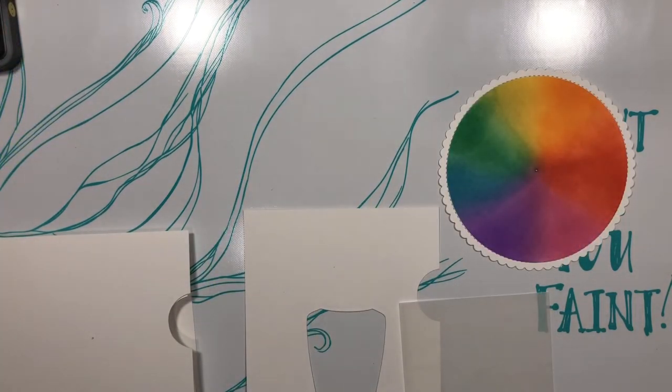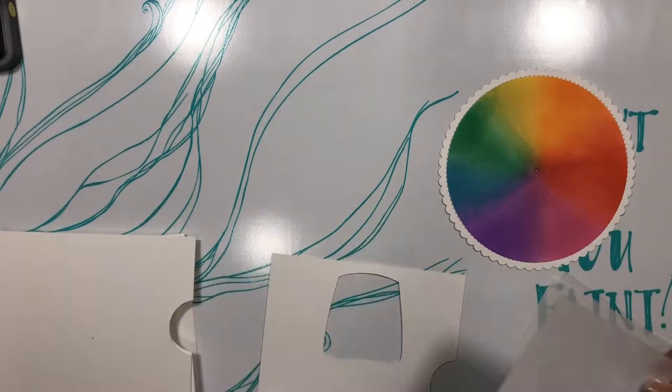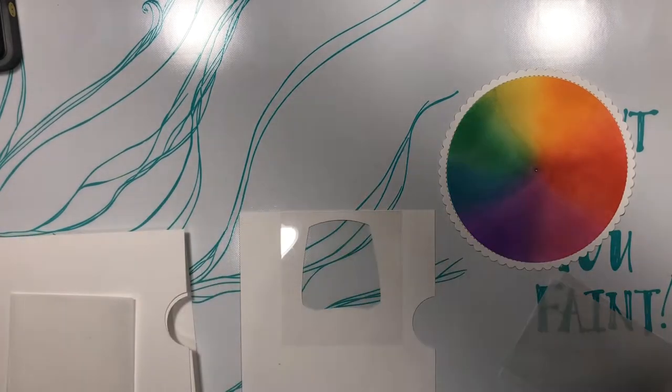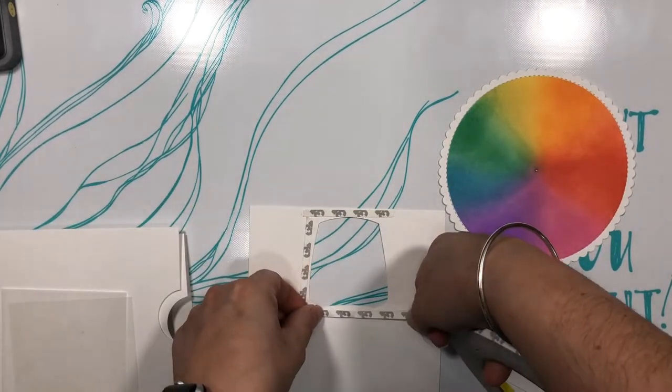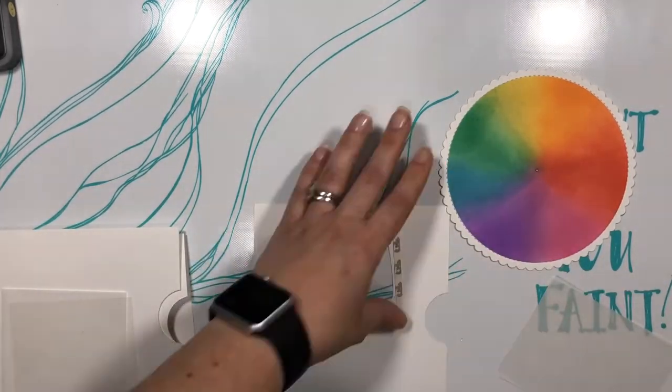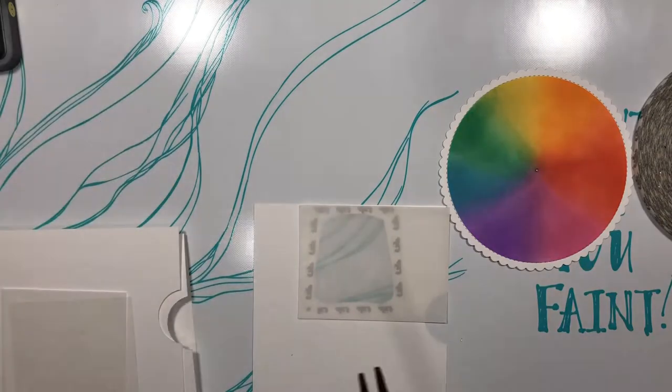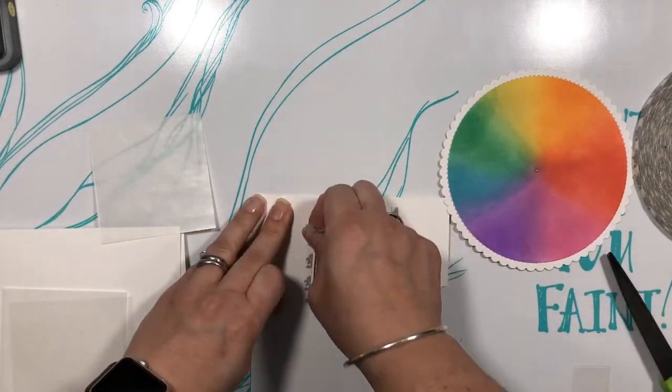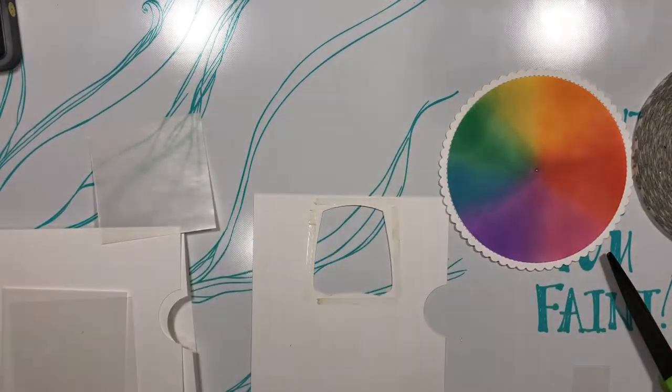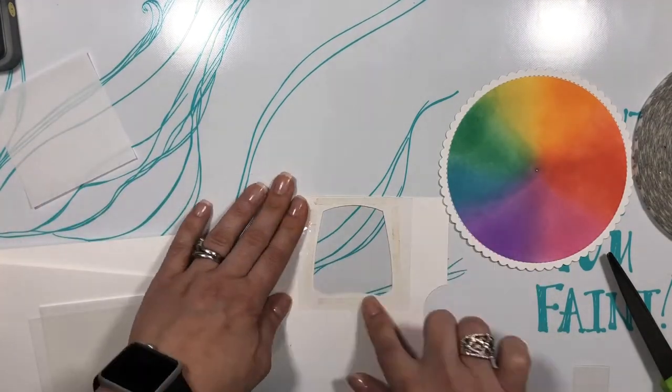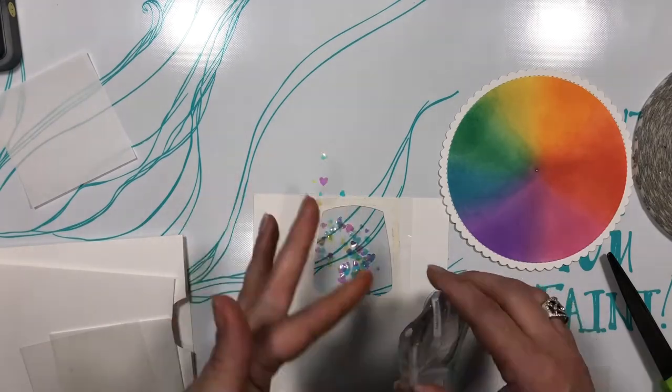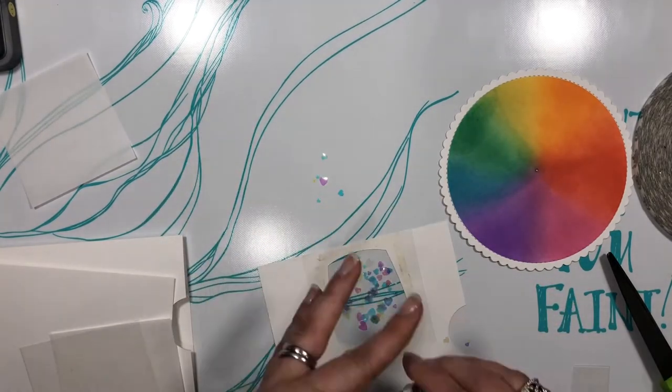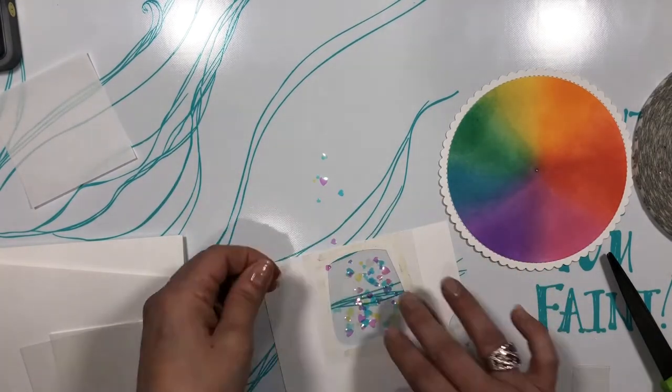To the nail polish bottle I thought it would be fun to add another interactive element. I wanted to create a nail polish bottle that looked like it had glitter in it. So to do that I created a little shaker window. These little love sequin hearts that I used are pretty thin so my well didn't need to be built up at all.